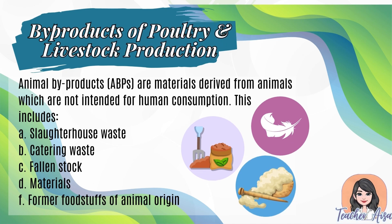Animal byproducts (ABPs) are materials derived from animals which are not intended for human consumption. This includes: a) slaughterhouse waste — byproducts derived when livestock are butchered in the slaughterhouse, leaving skin, bones, horn, hooves, blood, fat, and offal internal organs.